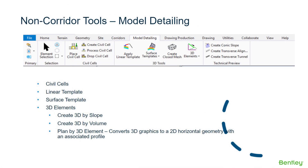For model detailing, we have civil cells we can place, linear templates, and surface templates. I may apply a surface template to one of the ponds to give it some depth. We also have 3D element tools — we can create elements by a slope from another 3D element, or create a 3D element by volume.